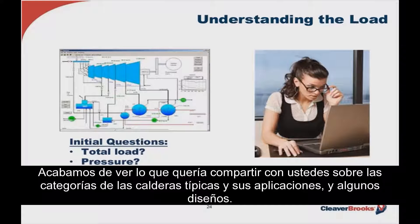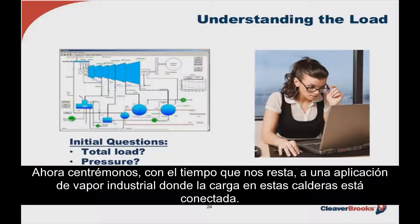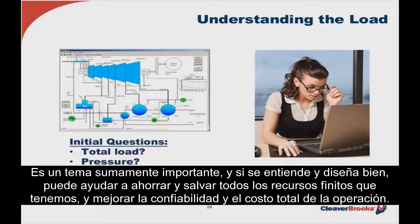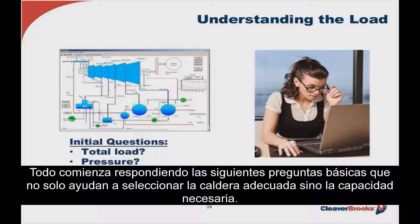That covers the border categories, their typical types, applications, and some design features. Now let's turn our attention to an industrial steam application and the load to which these borders may be connected. This is an extremely important consideration, and when properly understood and engineered, it can go a long way towards saving finite resources of oil and gas and the dollars associated with the spend, in addition to improving overall reliability and cost of operation. It all starts with answers to the following basic questions, which will help lead to proper selection of the border, the border type, and the correct capacity.